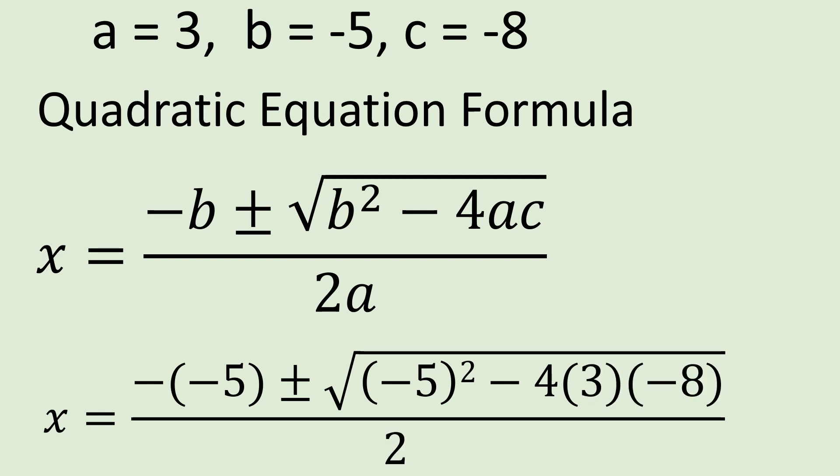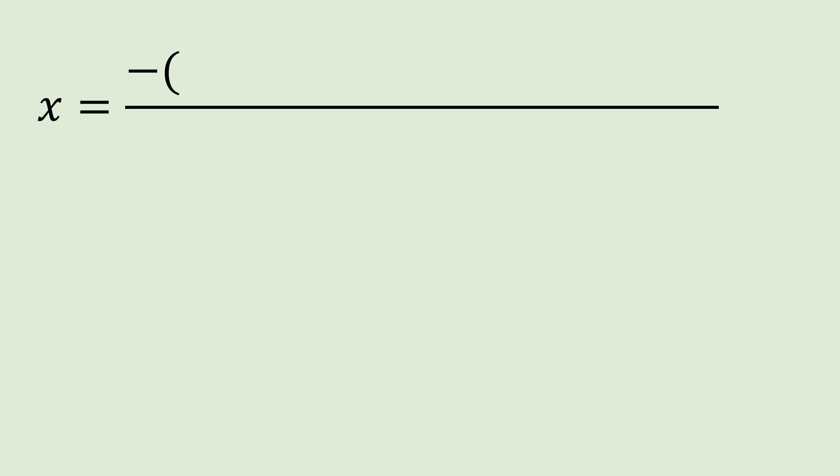We substitute into the formula. We have minus b, and our b is minus 5, so minus of minus 5 gives plus 5. The plus or minus sign is significant — it accounts for the two possible values of a square root solution. Inside the square root we have minus 5 squared, minus 4 times 3 times minus 8, and the denominator is 2 times 3.